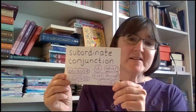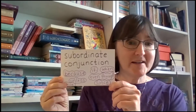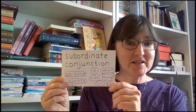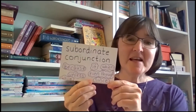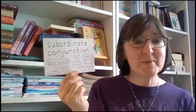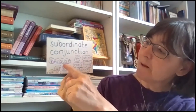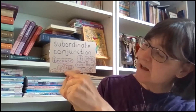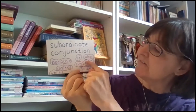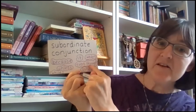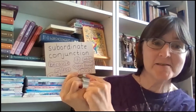There's another kind of conjunction called a subordinate conjunction. Examples of this are words you might have seen before, like: because, unless, while, if, when, even though, since.